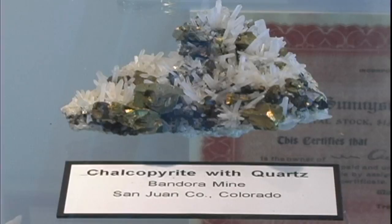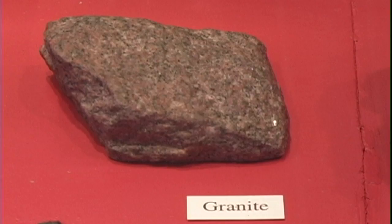The three main minerals in a granite are quartz, plagioclase, and potassium feldspar. Granites are usually light in color and have particularly medium to coarse-grained minerals in them. They can be light white or pink depending on the abundances of the minerals within them.